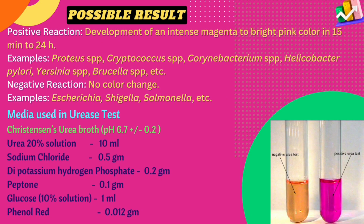For positive reaction, the media changes from intense magenta to bright pink color. Examples of urease-positive organisms include Proteus species, Cryptococcus species, Corynebacterium species, Helicobacter pylori, Yersinia species, and Brucella species.